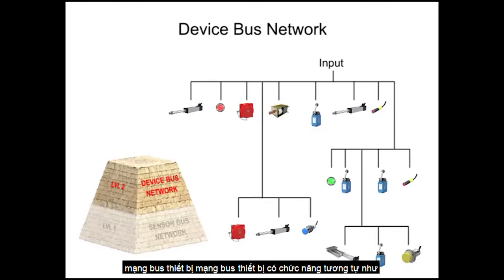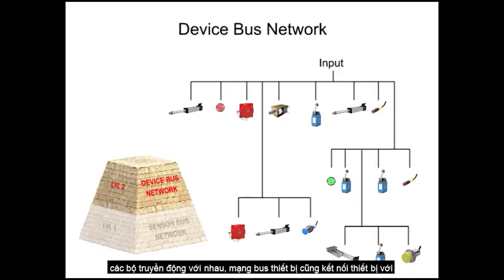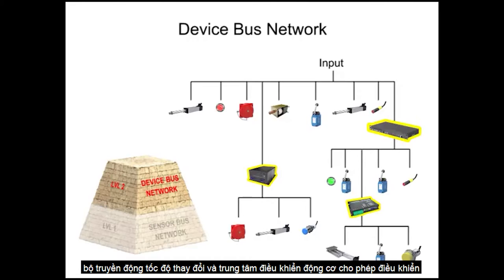The devicebus network is similar in function to the sensorbus network but works on a larger scale, connecting many sensors and actuators together. The devicebus network also connects equipment to variable speed drives and motor control centers that allow for control of individual elements in the network.